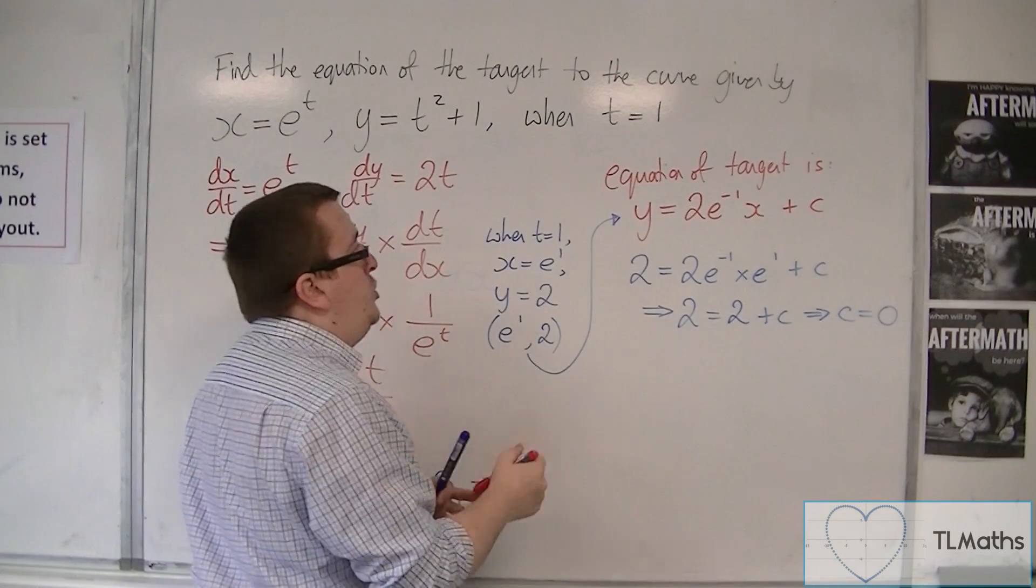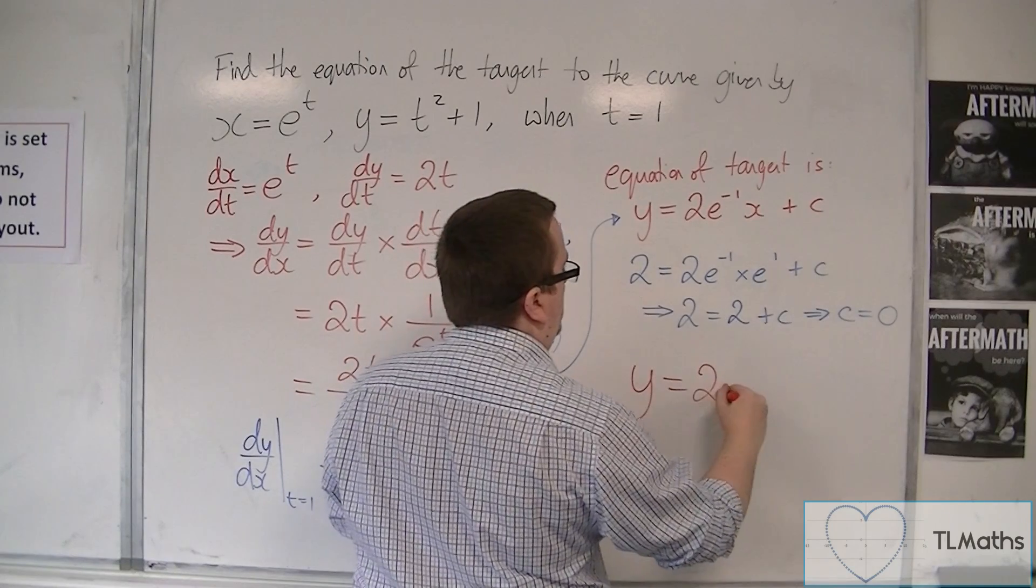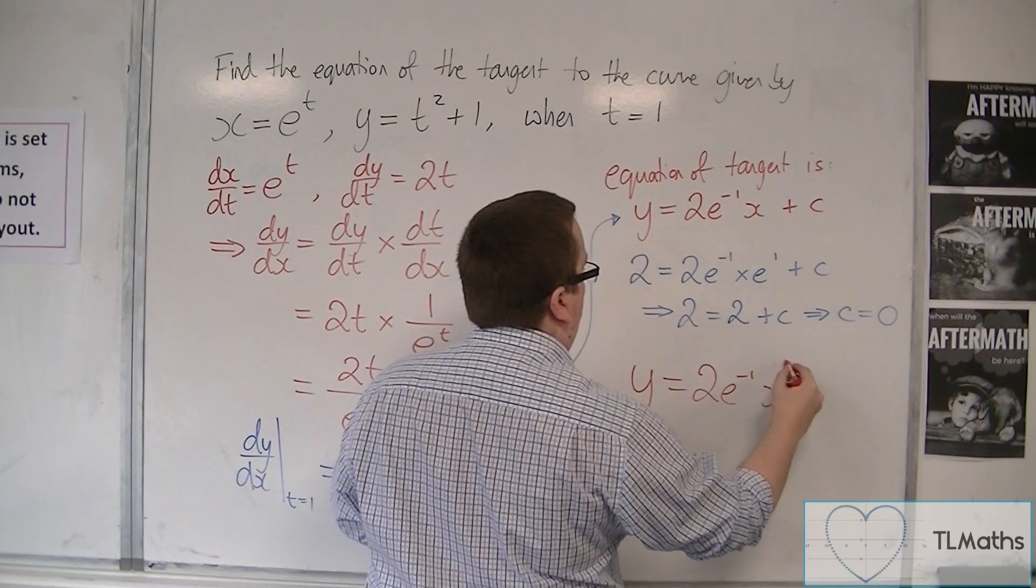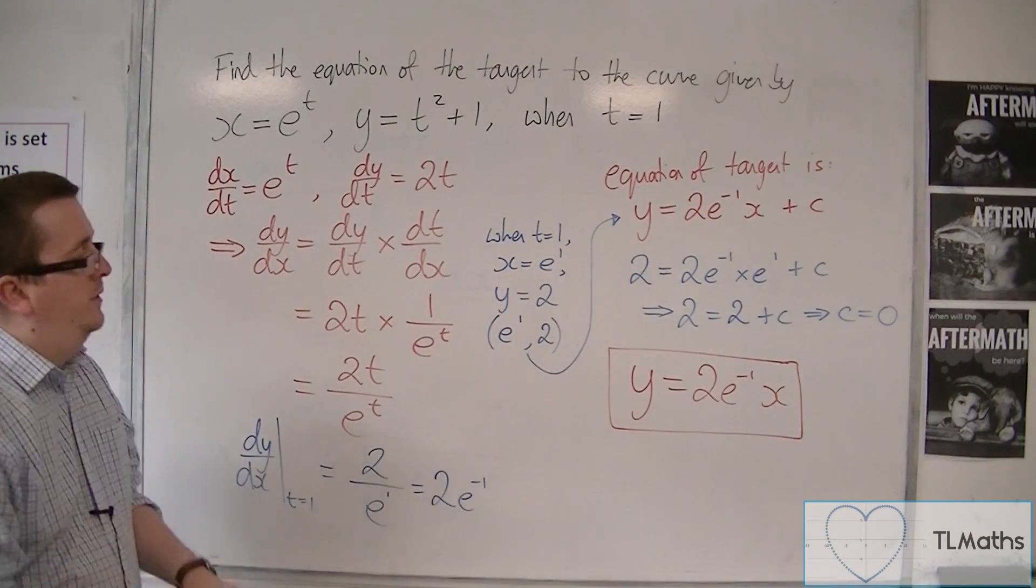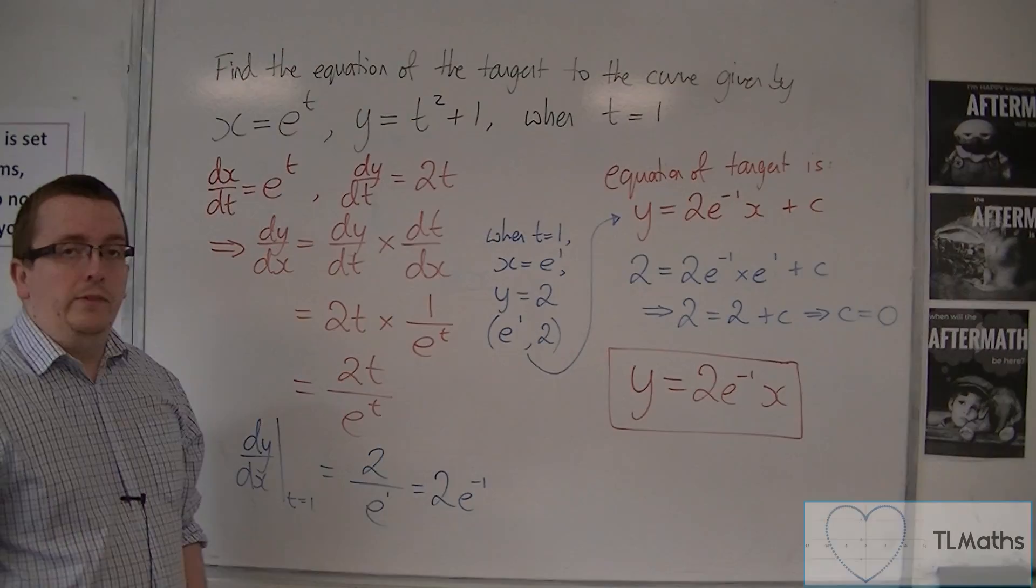So the equation of the tangent is y is equal to 2e to the minus 1x. That is the equation of the tangent that I was looking for. Okay, that's how we can solve a problem like this.